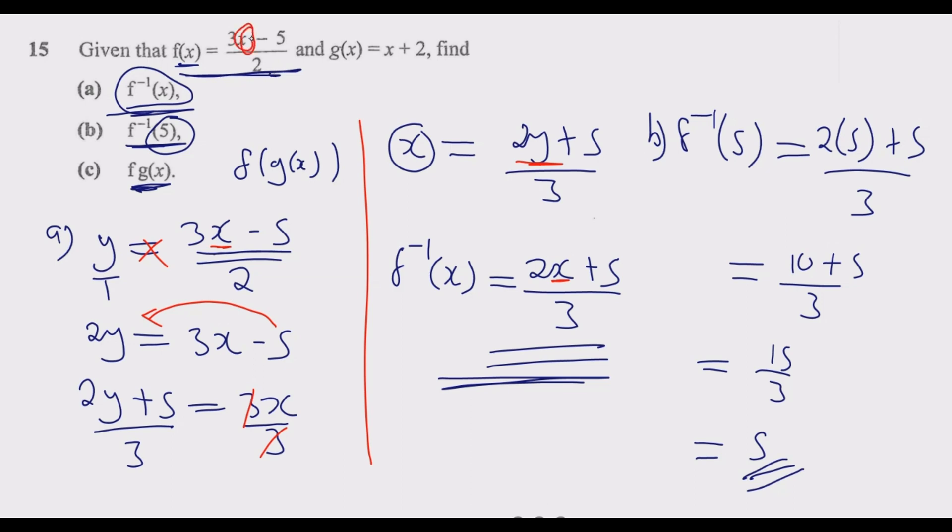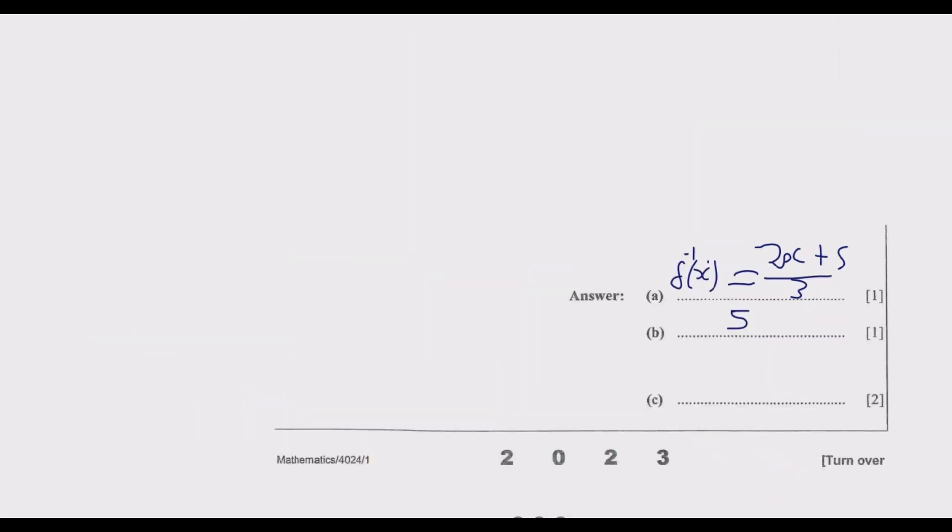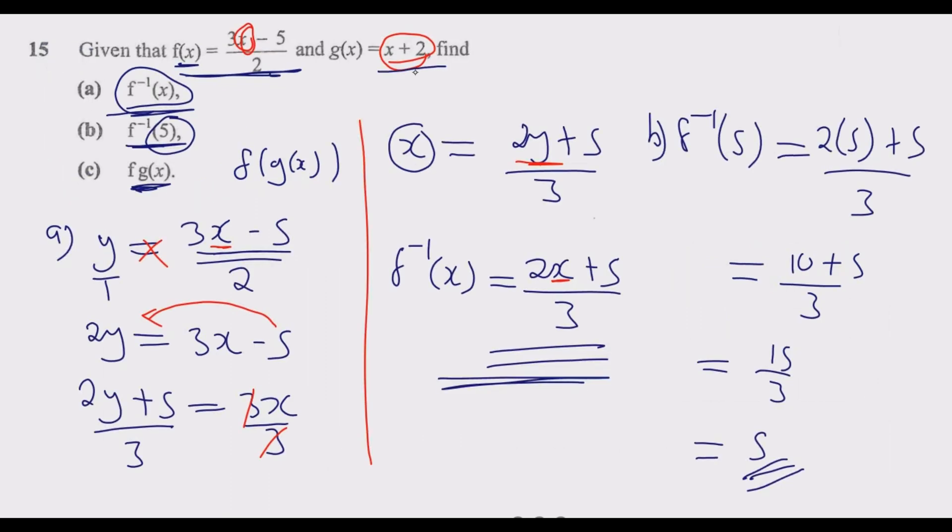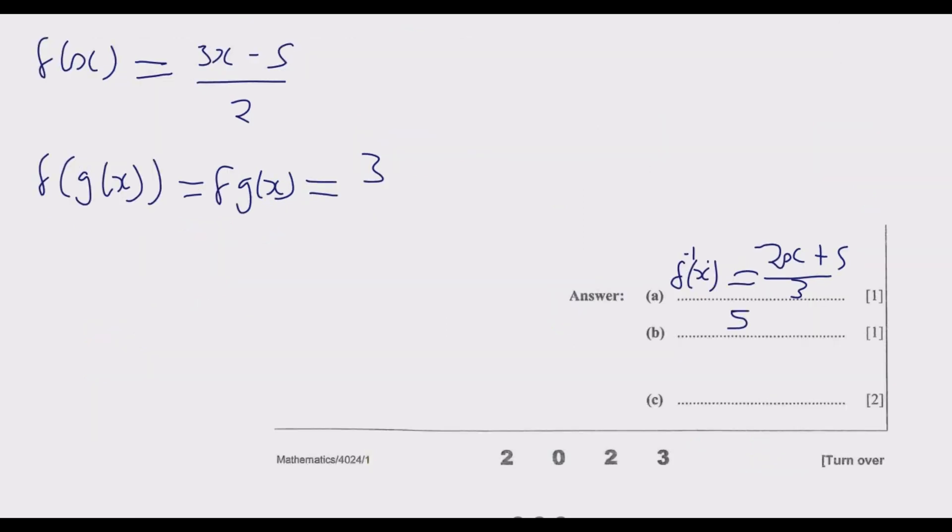This is what it means. We get this f(x) function, and whatever there is x, we replace it with g(x). That's it, the principle. Let us go through it. We know f(x) = (3x - 5)/2. Then to find f(g(x)), which is the same as f of g of x, what this tells me is in f(x), whatever there is x, I'm going to replace with g(x). And remember g(x) = x + 2.